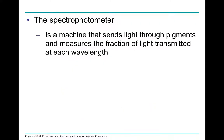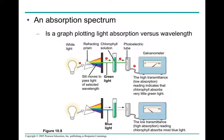A spectrophotometer is a machine that sends light through pigments and measures the fraction of light transmitted at each wavelength. An absorption spectrum is a graph plotting light absorption versus wavelength. For example, green light passes through a chlorophyll solution with high transmittance because chlorophyll reflects green. But blue light has very low transmittance through chlorophyll because the chlorophyll absorbs that blue light.